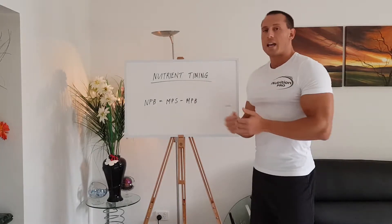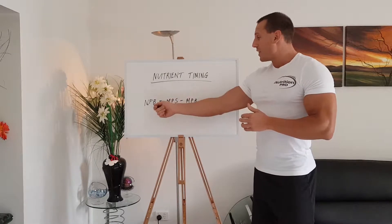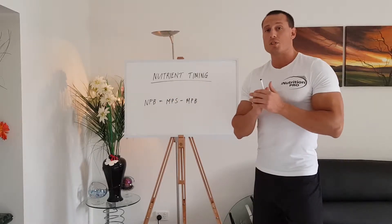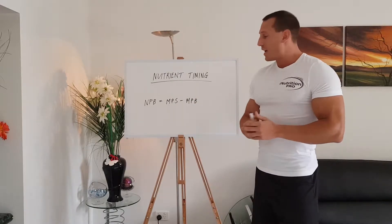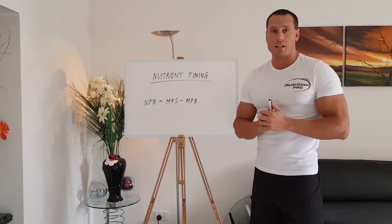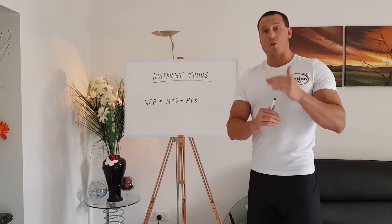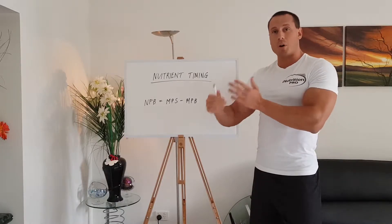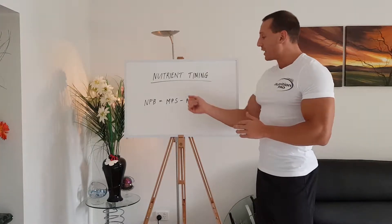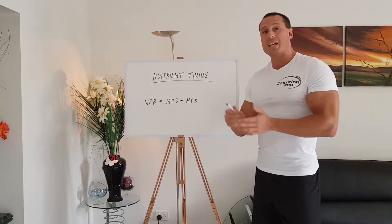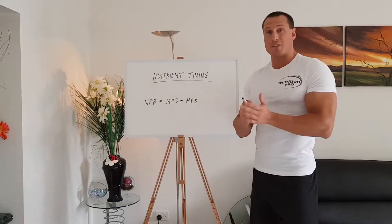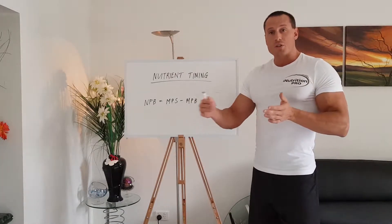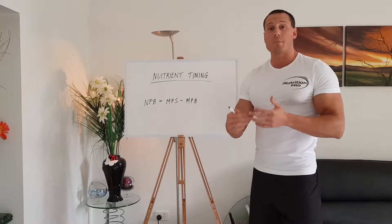To better understand nutrient timing, let's look at the concept of net protein balance. Net protein balance refers to the difference between muscle protein synthesis and muscle protein breakdown. If muscle protein synthesis over the course of a given day exceeds muscle protein breakdown, you're going to be in an anabolic state. However, if muscle protein breakdown exceeds muscle protein synthesis, we're going to be in a catabolic state — specifically in relation to muscle tissue. How we spread out nutrients throughout the day will impact net protein balance.